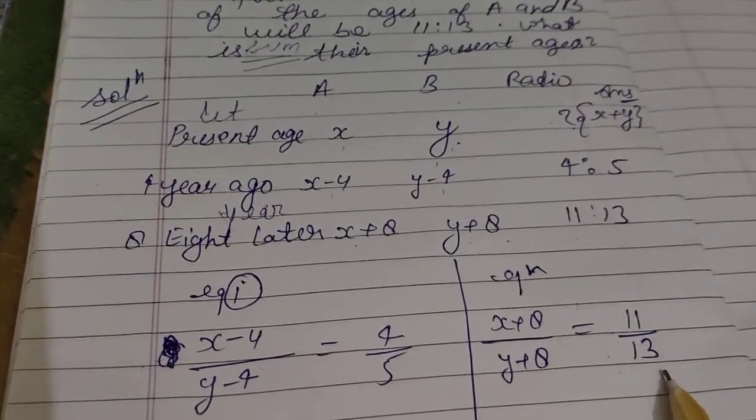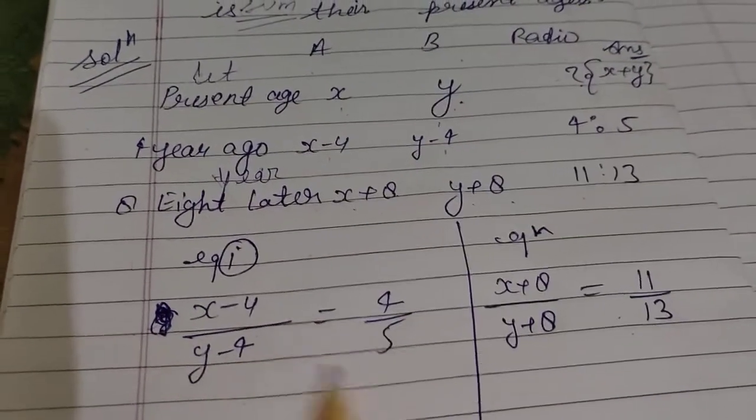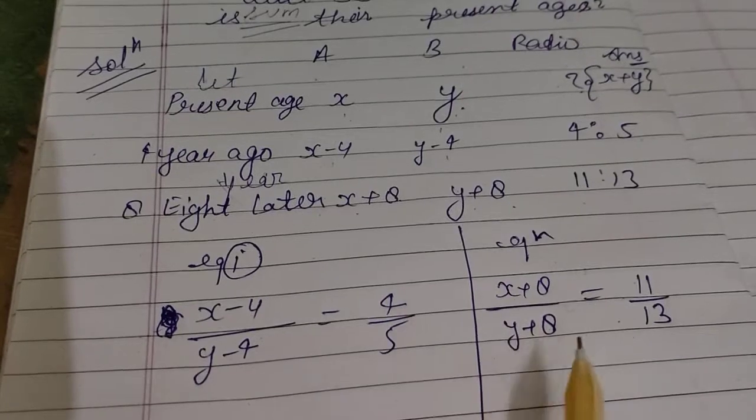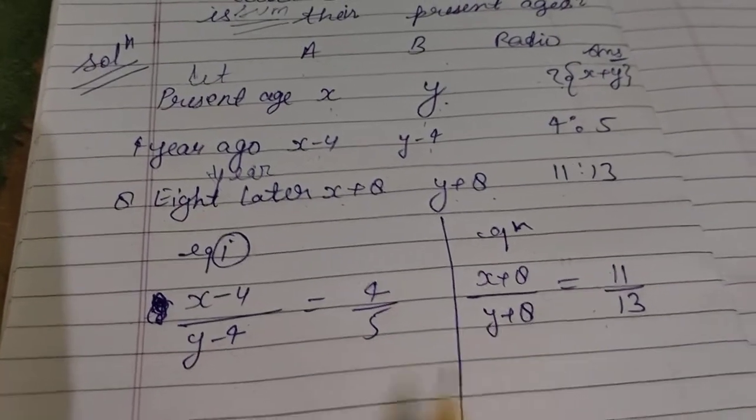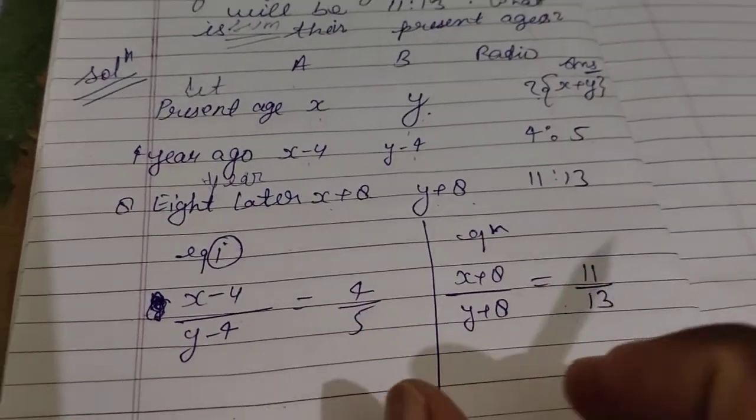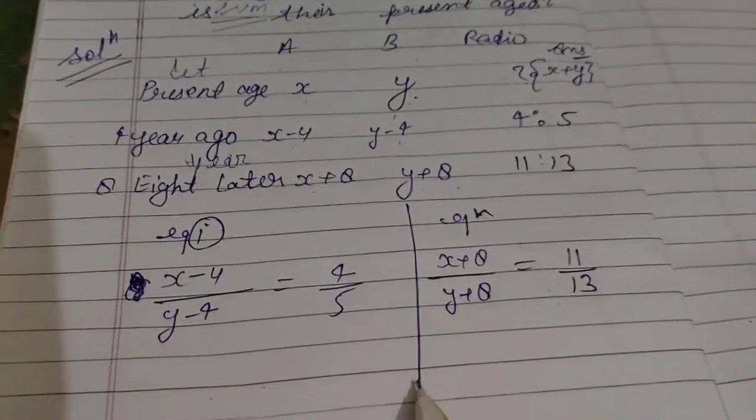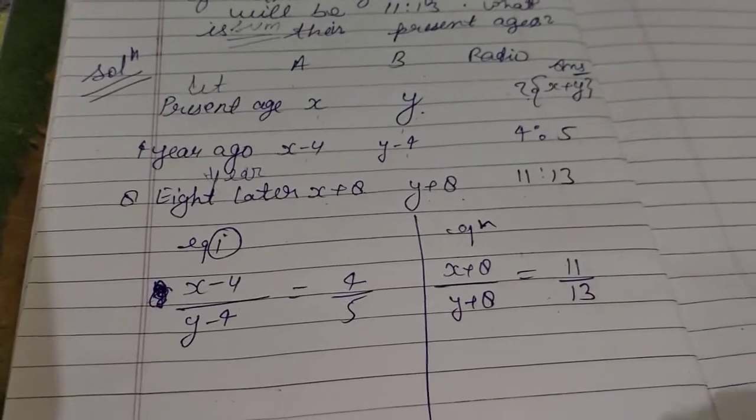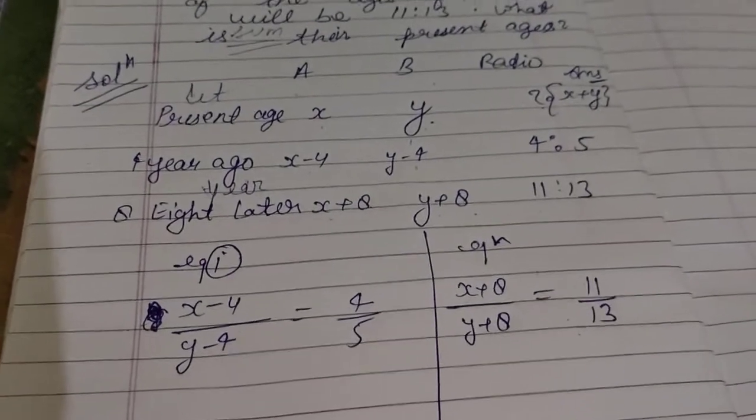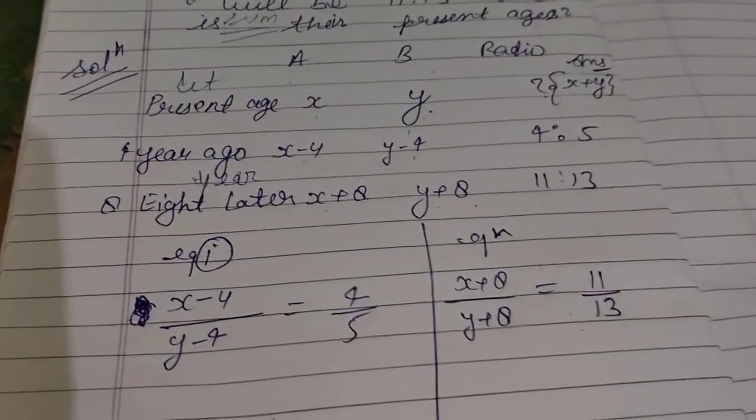Now you cross multiply to find the values of x and y, then sum them to get the answer. If you have any doubts, you can ask again.